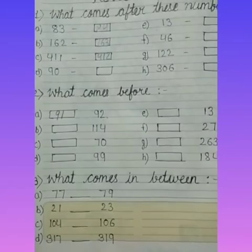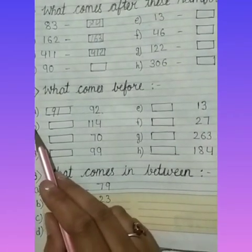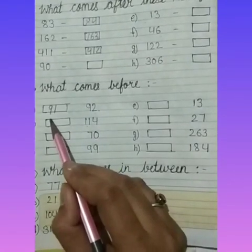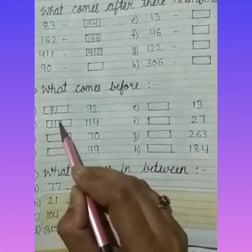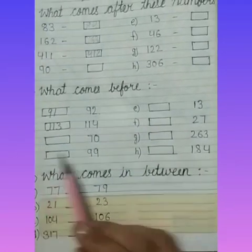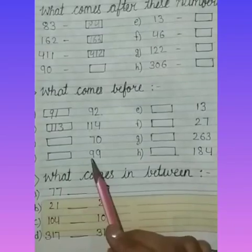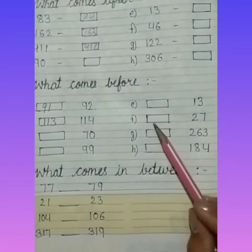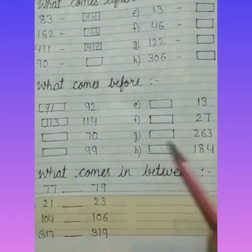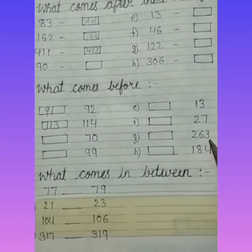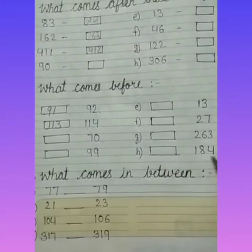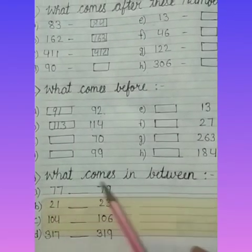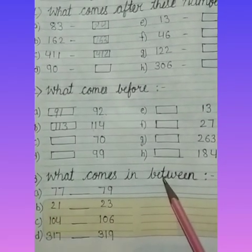Number B is 114, and before 114 is 113. C: 70, D: 99, E: 13, F: 27, G: 263, and H: 184. Our third question is: what comes in between?